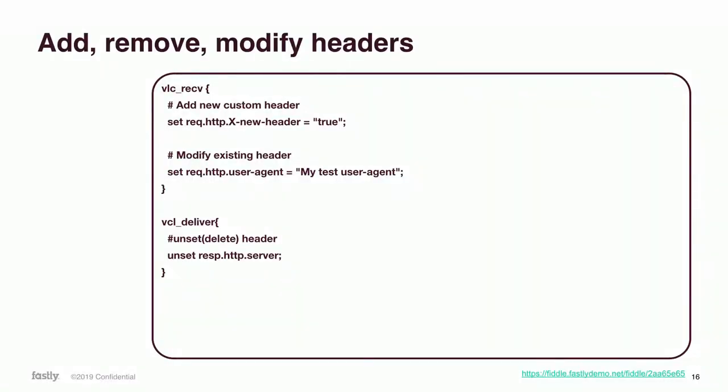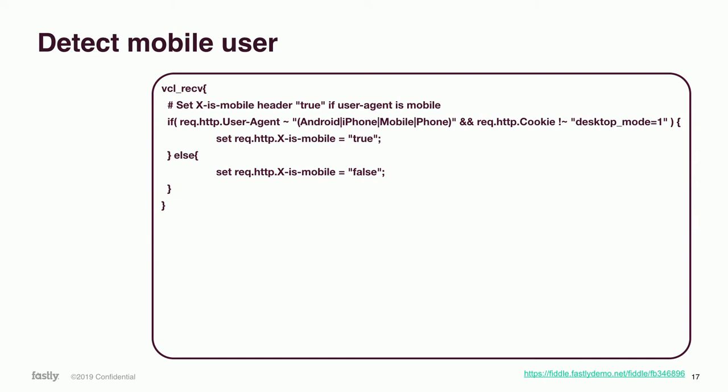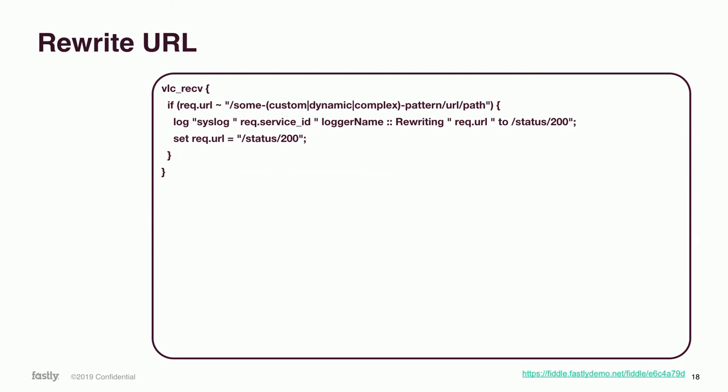You can also add conditions to the VCL code. In this case, when we receive the request from the end user, we check the User-Agent string. Depending on what's in the User-Agent, we set X-Is-Mobile to true or false. You can also add multiple conditions — however, if the request has a cookie with desktop_mode equal to 1, it always goes to the else condition. You can also rewrite URLs: when we receive the request we check the URL, and if it matches, we can override the request URL to the origin without changing what the end user sees.